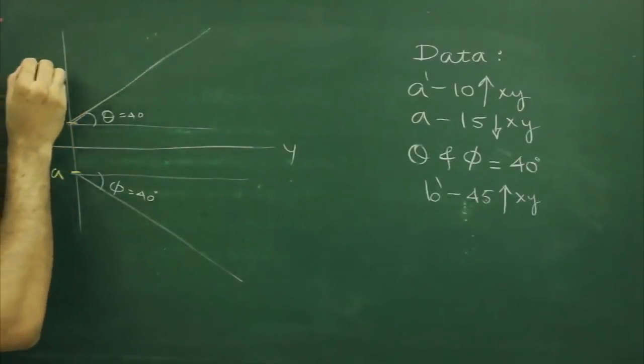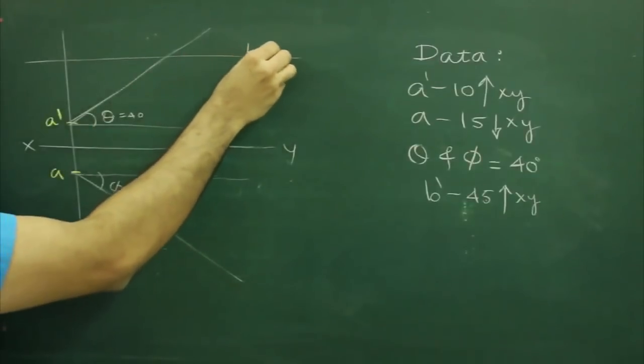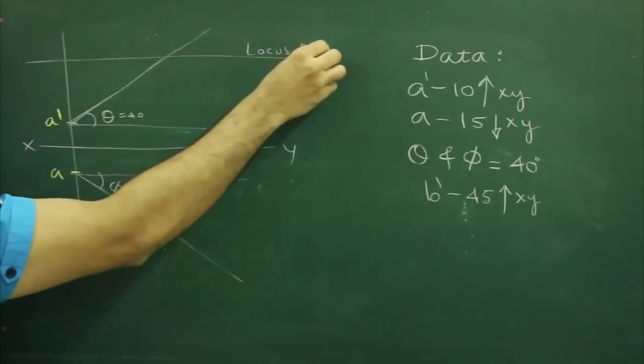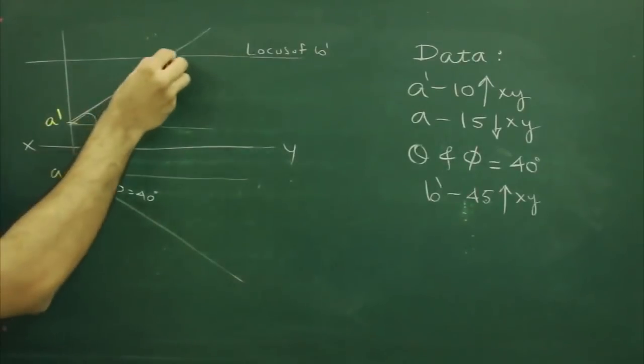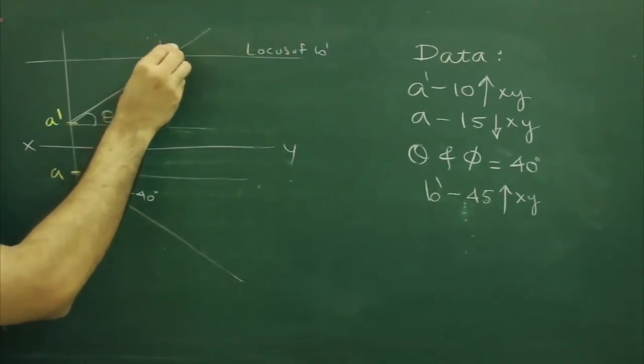From here I will go up by 45. I will draw the locus of B dash. Wherever it will cut, that would be my B1 dash.